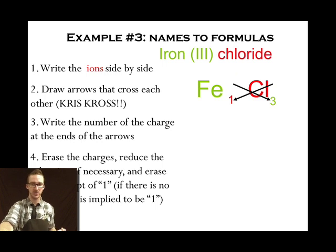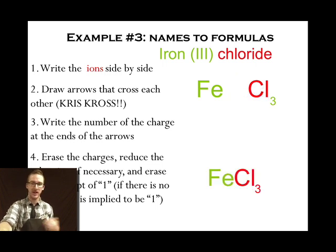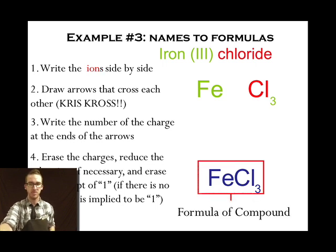Erase the charges, any subscripts of one, reduce if necessary. In this case, our final compound formula is gonna be FeCl3. I need one of those iron three ions, three of the chloride ions to make an overall neutral compound. My formula unit for iron three chloride.